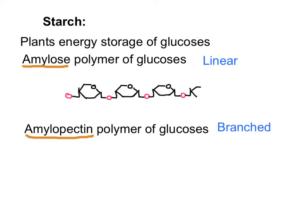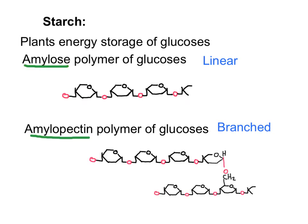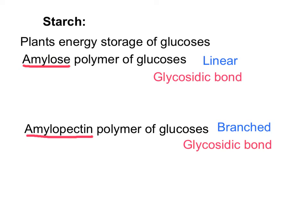Amylose has about 4,000 units of glucose and amylopectin, due to the branches, will have about 10,000 units. While amylose has alpha-1,4 glycosidic bonds, amylopectin will have both alpha-1,4 and alpha-1,6.